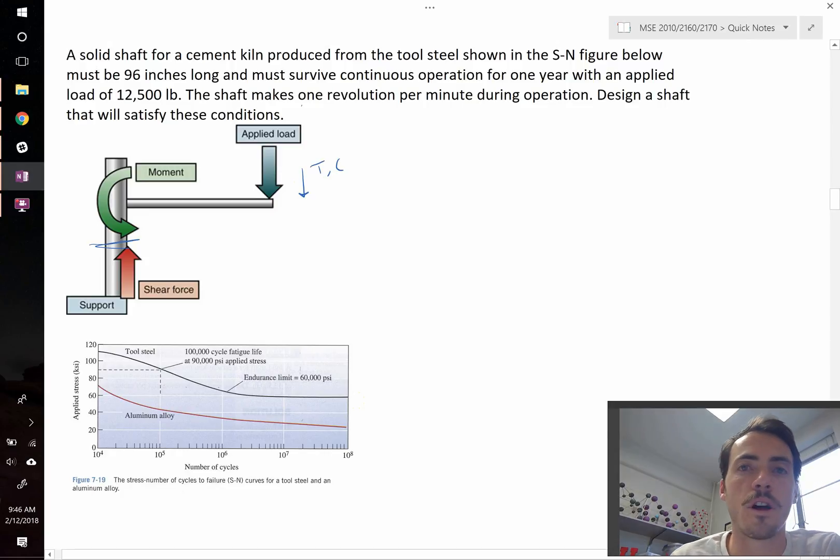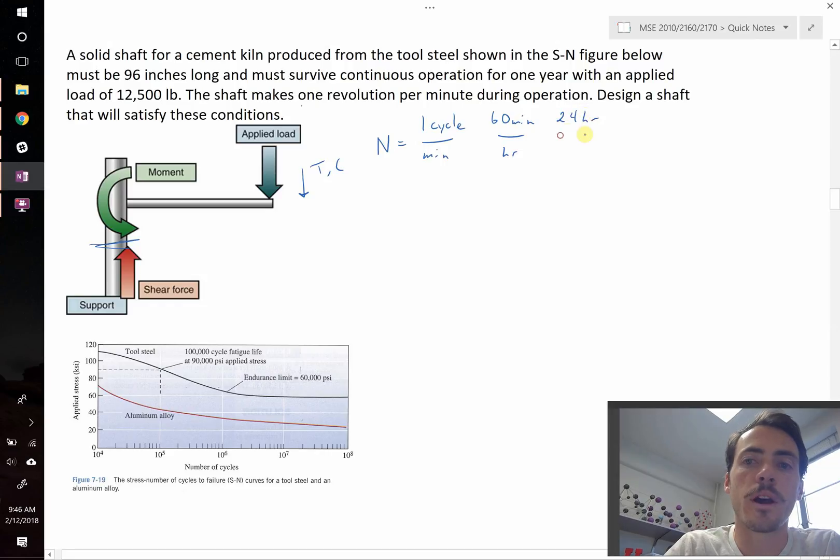So the first thing to do, since we're told that it needs to rotate one revolution per minute and last a year, let's figure out how many cycles we're actually talking about. So N, the number of cycles, this is going to be one cycle per minute. We know that there are 60 minutes in an hour, there are 24 hours in a day, and that there are 365 days in one year.